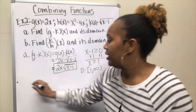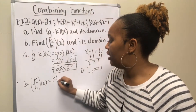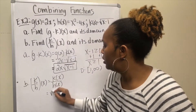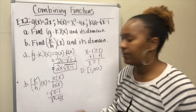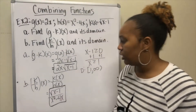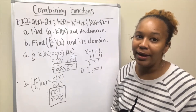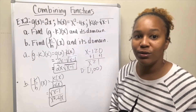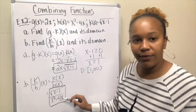For part b, (k/h)(x) = k(x)/h(x) = √(x-1) / (x² - 4x). There are no like terms to combine, so this is your final expression. Now to find the domain, this function fits into two separate categories: it has an even root and it also has a fraction.